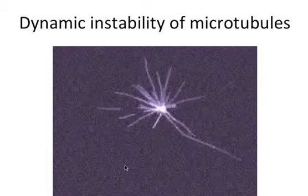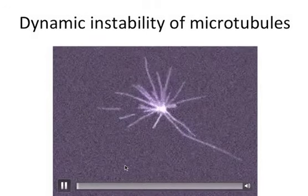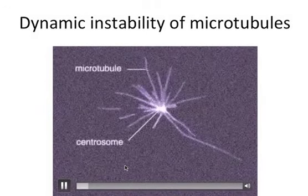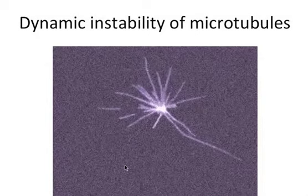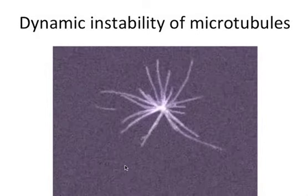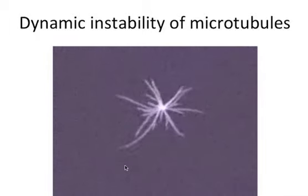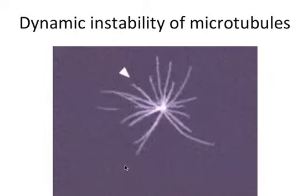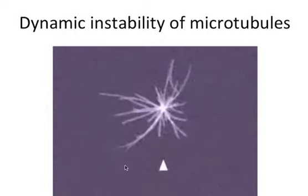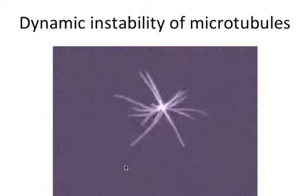Here's another one — done in a test tube where they have a microtubule organizing center and that's where microtubules start to grow, showing dynamic instability. Microtubules continually grow from the centrosome added to a cell extract. Suddenly, however, some microtubules stop growing and then shrink back rapidly. This is dynamic instability — write that down and make sure you understand it.